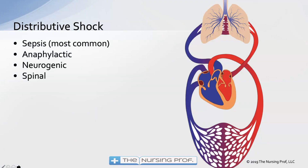Distributive shock occurs when we have fluid moving away from the heart. One of the most common reasons is sepsis, which causes massive vasodilation in the periphery, keeping blood away from the heart — not enough blood to pump, creating a shock state. Anaphylactic shock also causes an overwhelming inflammatory response, of which vasodilation is a component. Neurogenic shock can cause massive vasodilation through stimulation of the parasympathetic system without balanced sympathetic input. Lastly, spinal shock is caused by massive vasodilation resulting from spinal cord injury.